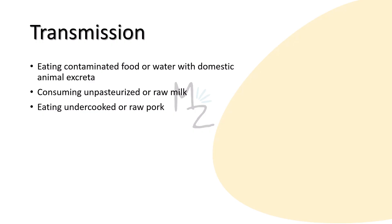Transmission: these organisms are transmitted to humans by contamination of food with excreta of domestic animals such as dogs, cats, and cattle. They are also transmitted by consuming unpasteurized or raw milk, or by eating undercooked or raw pork.